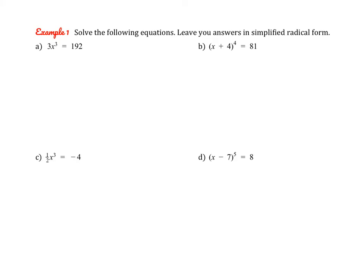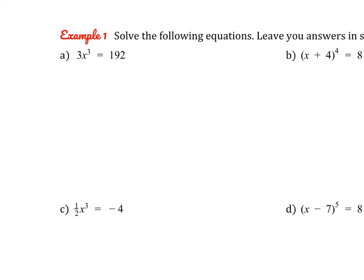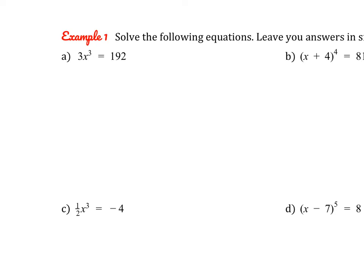All right, so let's give these four a try together. So we're going to solve, and we're going to leave our answers in simplified radical form when necessary. So remember, our first job, if I look at number one, is to isolate. So I see that I need to move the three to the other side. So I can do that by dividing both sides by three. And that gives us x cubed equals 64.